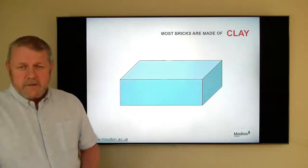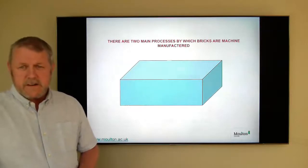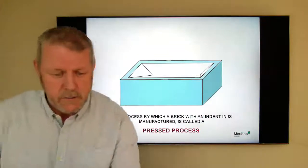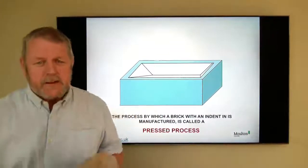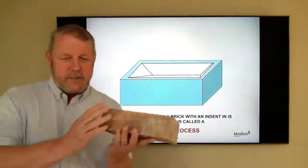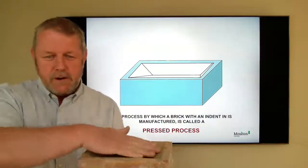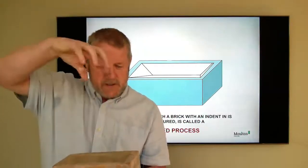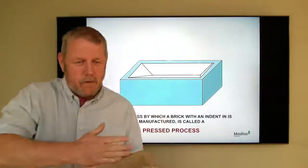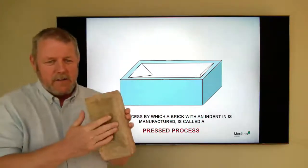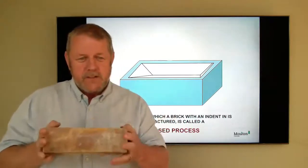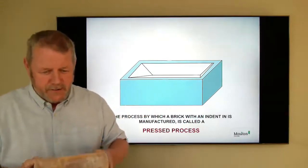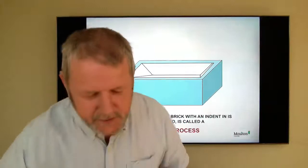There's two types of bricks and the way they're manufactured. The first one is what's called a pressed process. As you can see this brick, it's got an indent in the top and the brick is formed into its rectangular shape and then a press compacts down into that form in that indent, making the brick nice, solid, compact, far more impervious to moisture penetration. So that's the first type which is a pressed brick.